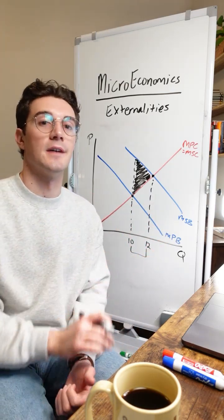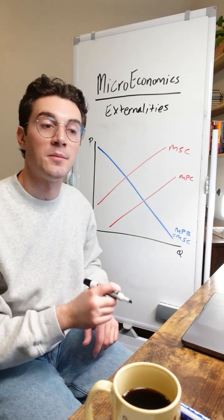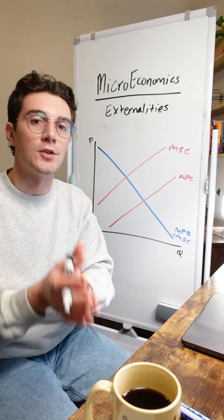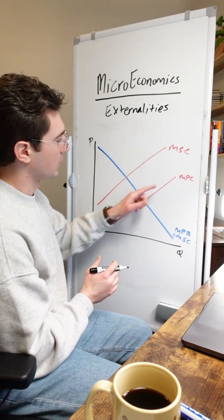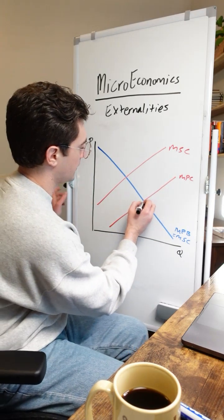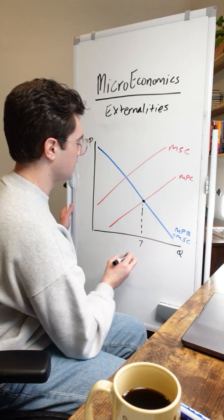Let's do the same thing now but with negative externalities. Remember, start by pinpointing the private market output versus the socially optimal output. Private market occurs at the intersection of the marginal private cost and marginal private benefit curves. We'll say happening at seven units.